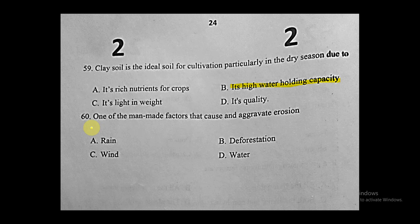Question sixty: one of the man-made factors that causes and aggravates erosion is deforestation. Rain and wind are physical factors, not man-made. Deforestation — the cutting of trees — is a man-made factor that causes erosion. This was the last question of the model. I hope you benefited from today's answers. In upcoming videos we will solve more models together. Thank you for listening and watching. Goodbye.